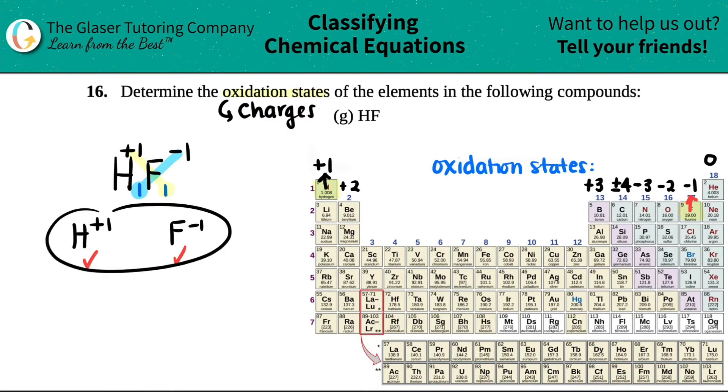I would say hydrogen, its oxidation state is a plus one, and then fluorine is a minus one. Just know that these are the oxidation states, these are the charges. What it actually means is that when hydrogen came together with fluorine to form hydrofluoric acid or hydrogen fluoride, hydrogen being a plus one meant that it lost one electron.